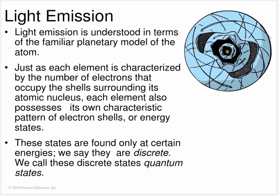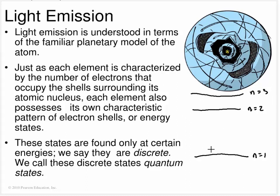If I were to draw the energy states, we draw the ground state - n equals 1, the first electron shell - then n equals 2, the second electron shell, and n equals 3, the third electron shell. If an electron lives at n=1, it's going to take some energy to move it up. It's going to preferentially absorb light that corresponds directly to this energy gap. If the light had a different amount of energy - say enough to reach only partway - it's not going to be absorbed. Similarly, if an electron jumps down, it will preferentially emit light with a very discrete amount of energy, corresponding to a single wavelength and only that wavelength.